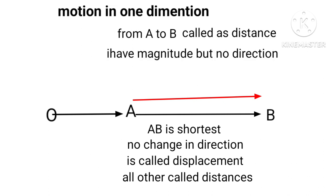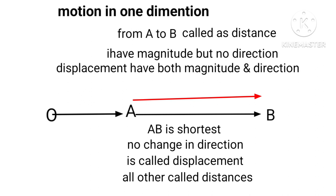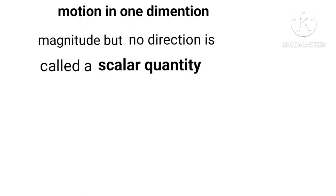Distance has magnitude but no direction, whereas displacement has both magnitude and direction. A physical quantity that has magnitude but no direction is called a scalar quantity. It is represented as absolute AB, for example.